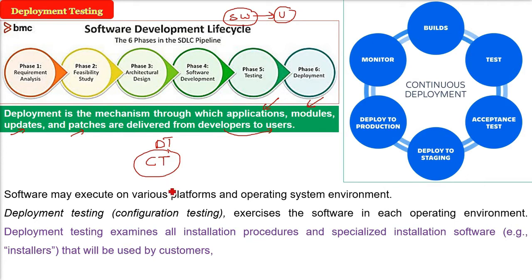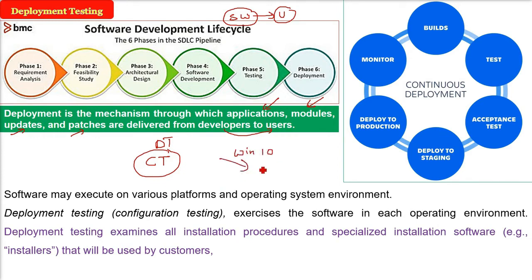Deployment testing will examine all installation procedures and specialized installation software. These are called installers — we make them using InstallShield etc. — that will ultimately be used by the end users or the customers. For example, Windows 10 has been given and now we are upgrading it to Windows 11. So we have to check the software before we actually hand it over to the user.